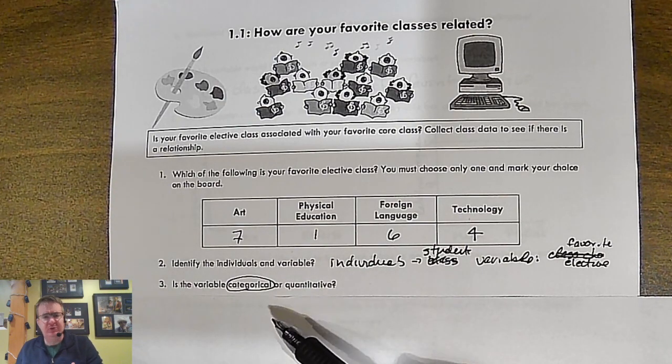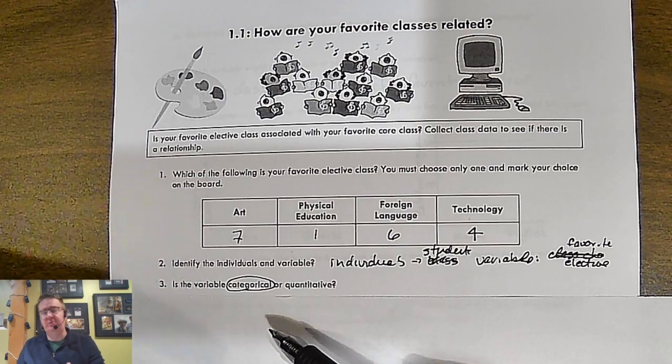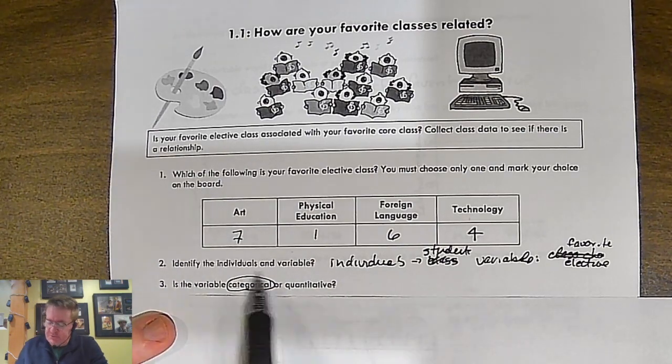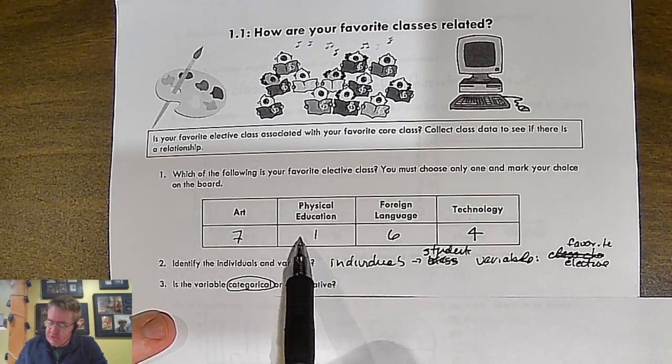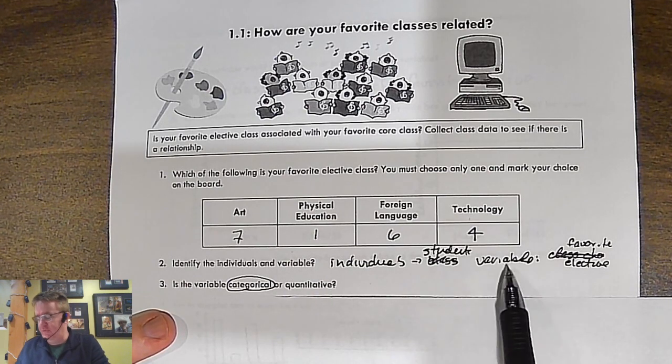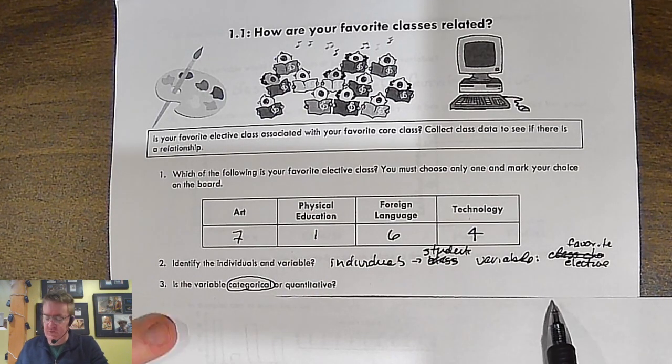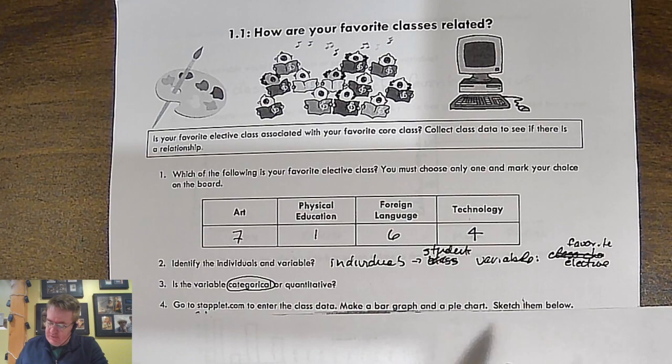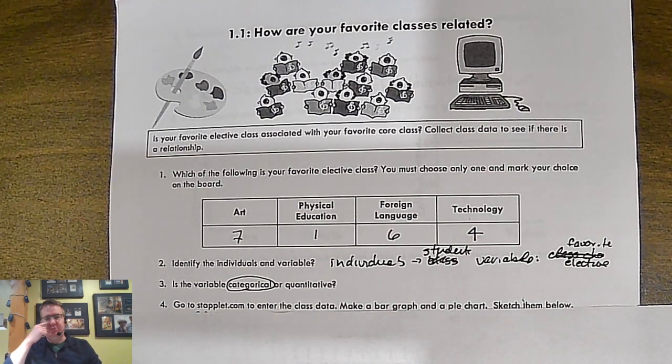Quantitative would be like how tall you are, 72 inches. In terms of individuals, individuals are going to be the students themselves, and then the variable is your favorite elective. Now, what we end up doing then is I have everybody pull out their Chromebooks and they go over to Staplet.